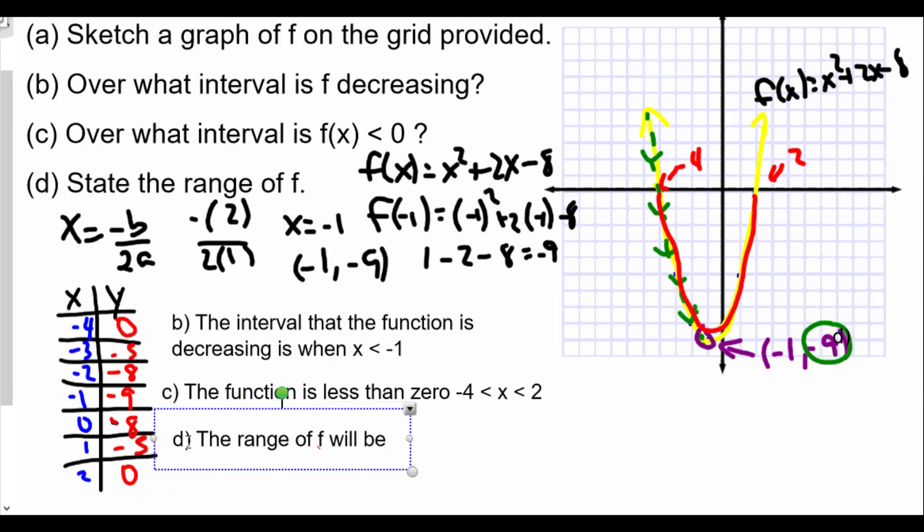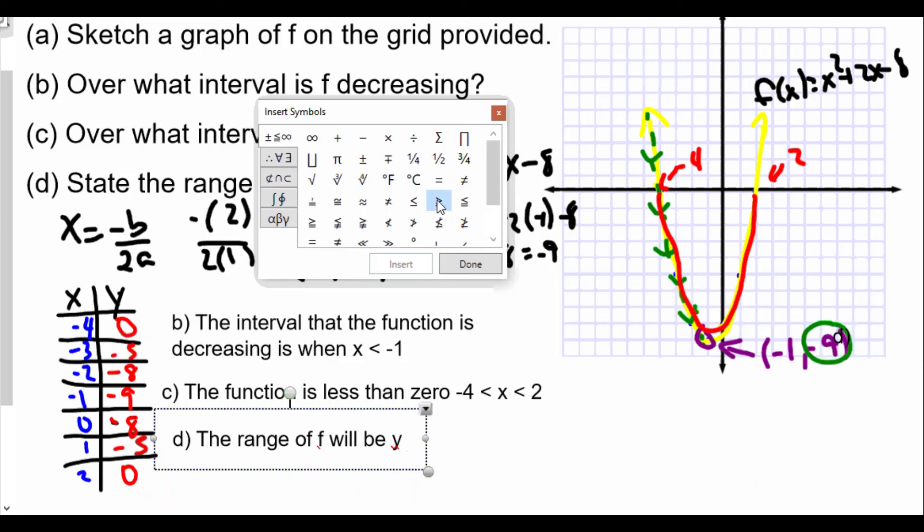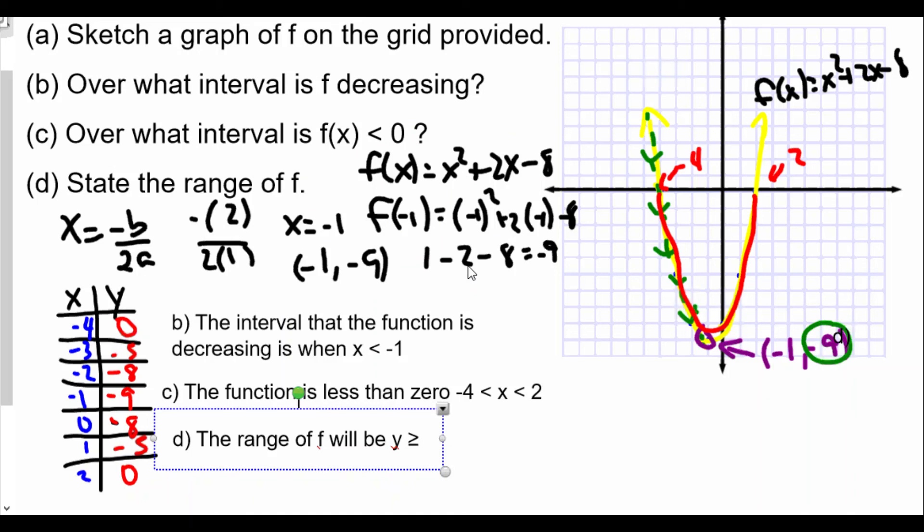So for part D, we would say in this case, the range of f will be y is greater than or equal to -9. That's your range. Because all the possible y-values of the function will be at -9 or higher.